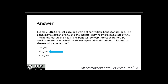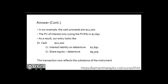Let's dig into the journal entry for this sale from JVC Corp. The cash proceeds received were $12,000. The present value of the interest only, using the present value formula for the nominal interest payable, was $2,691. Therefore, the present value of the interest liability on the debenture is $2,691. The remainder, which represents the convertible feature as well as the principal payment on this debt, would be allocated to the share equity debenture in the amount of $9,309.